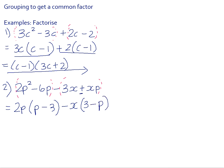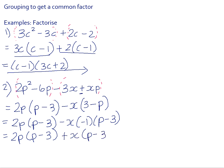Now, this bracket here is not common. But we saw in the previous lesson or the previous video, that if you take out a common factor of negative 1, you can switch the terms around. So that gives you 2P times P minus 3 plus X times P minus 3.